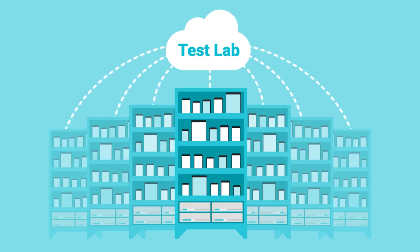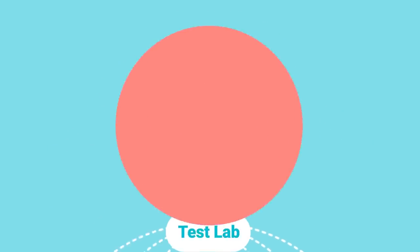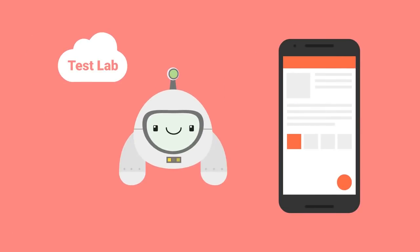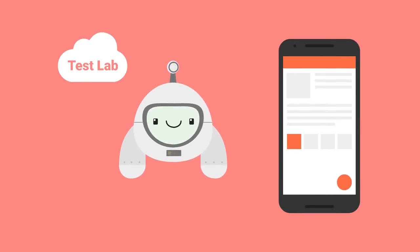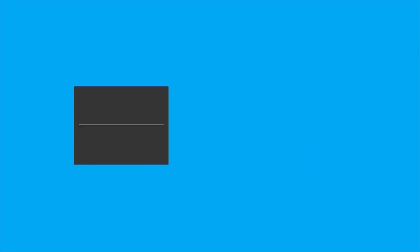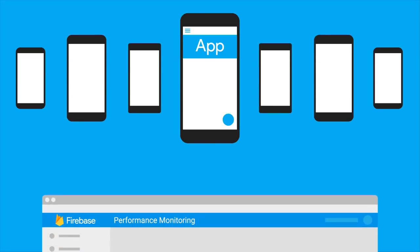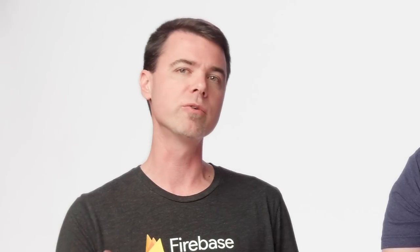Yeah, so with Test Lab, you can test your app on a wide variety of devices before you ship it to your customers. And with performance monitoring, you can measure your app's performance from your user's perspective. Both are great tools to use along with Crashlytics in order to ensure your app meets a consistently high bar of quality.